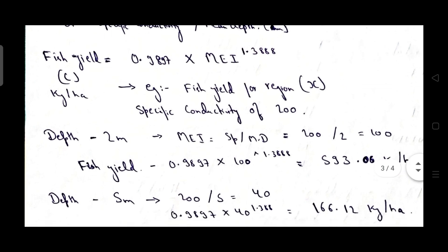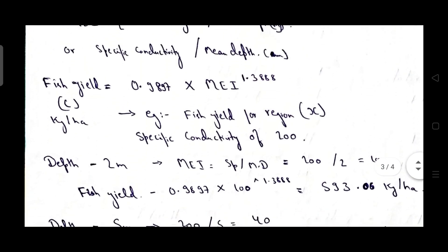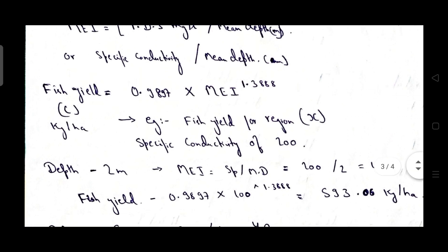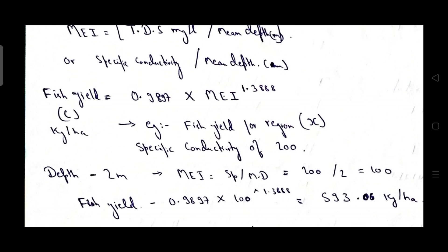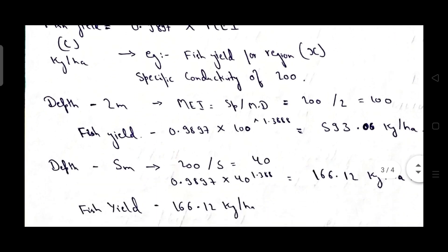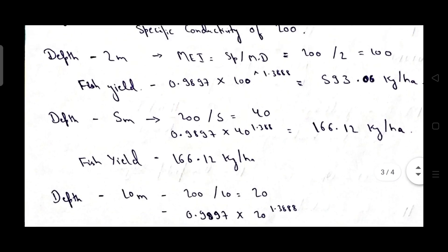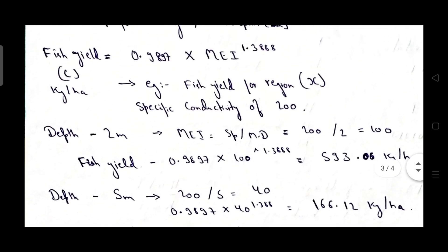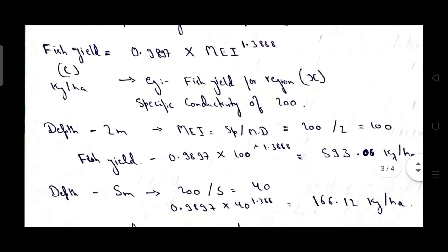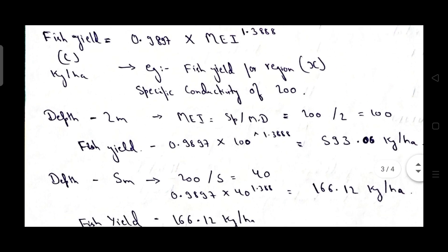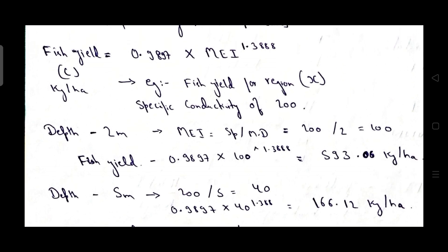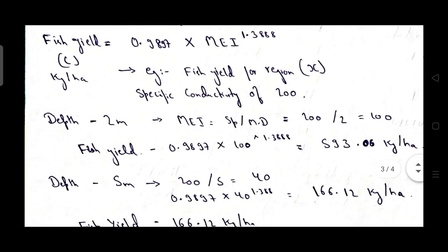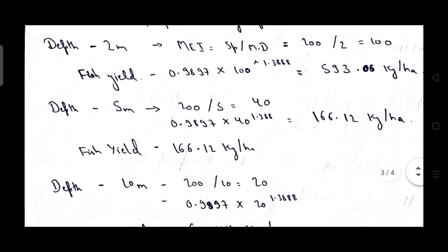I have also solved three numericals based on this formula and how you can calculate fish yield from this morphoedaphic index is fish yield equals 0.9897 into morphoedaphic index to the power of 1.3888 and I have mentioned three important numericals. I have solved these numericals so you can check the numerical and you can understand that how morphoedaphic index and fish yield potential depends on each other and how you can derive the fish yield from the formula of 0.9897 into morphoedaphic index to the power of 1.3888. These three numericals you can understand from this.